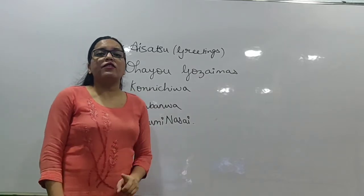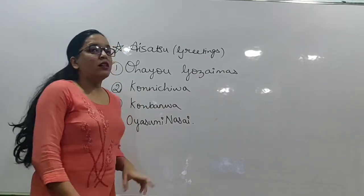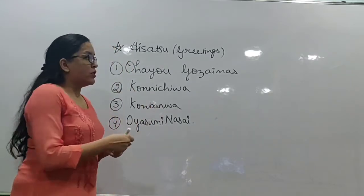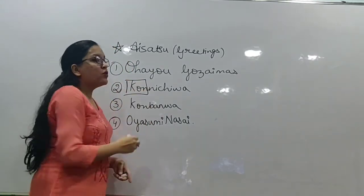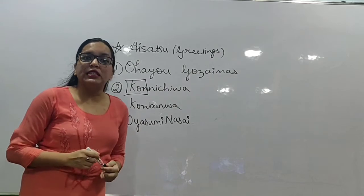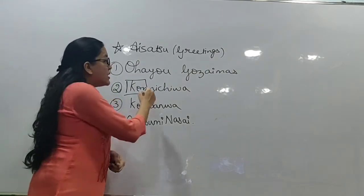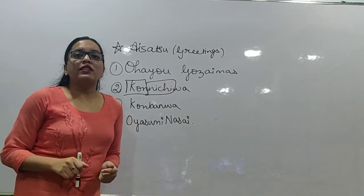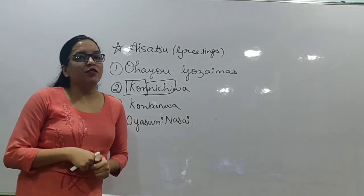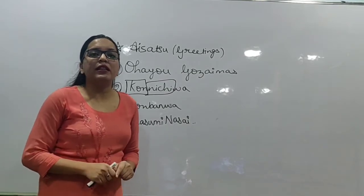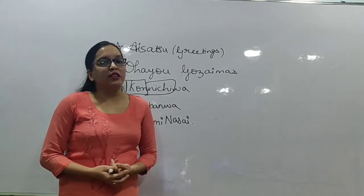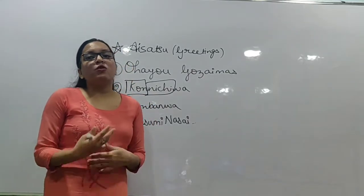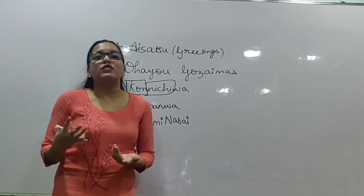Konnichiwa is made from two words. The first word is 'Kon,' which means 'this,' and the second word is 'Nichi,' which means 'day.' Together with 'wa' added at the end — whose meaning we will discuss in later sessions — Konnichiwa becomes a greeting meaning good afternoon.